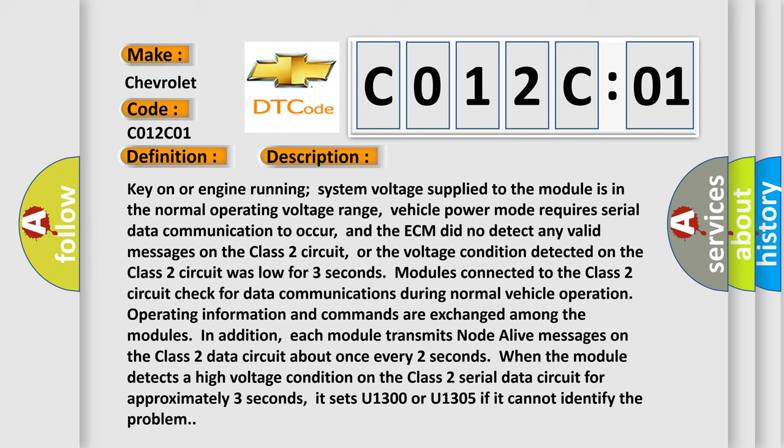Or the voltage condition detected on the Class 2 circuit was low for three seconds. Modules connected to the Class 2 circuit check for data communications during normal vehicle operation. Operating information and commands are exchanged among the modules.